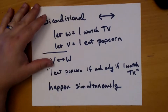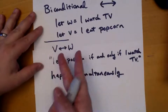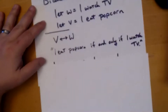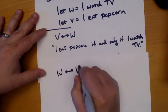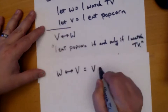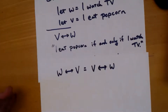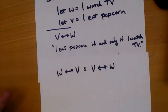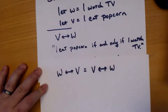Since they happen at the same time, the order doesn't matter in the biconditional. It's kind of like saying 'I'm awake if and only if I'm not sleeping,' and 'I'm not sleeping if and only if I'm awake' — they mean the same thing. They're equivalent. This is the only symbol where you can flip back and forth like that — we'll talk about the one-headed arrow next class.